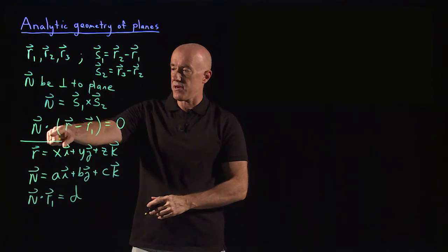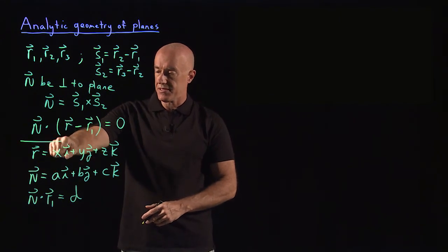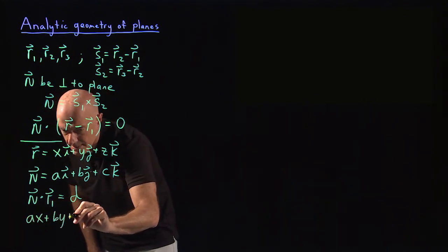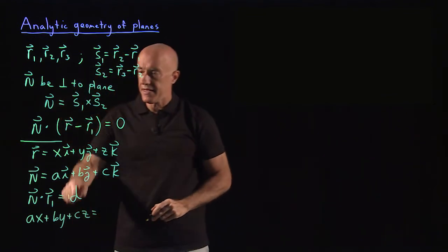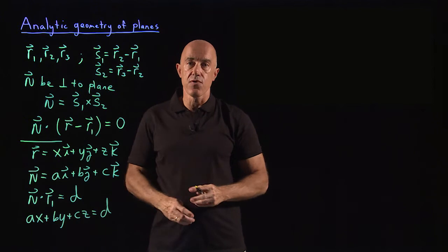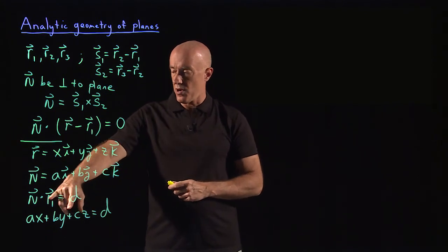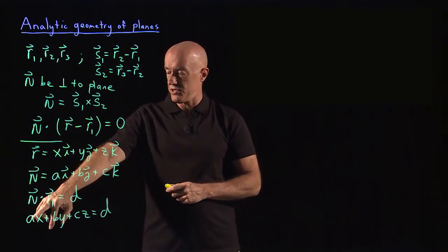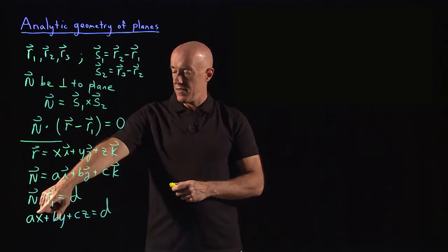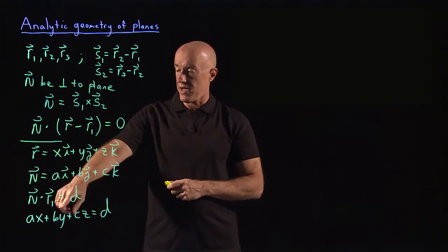Putting this together, we have n dot r equals n dot r1. So n dot r will be ax plus by plus cz, and that equals n dot r1, which is d. That is the equation for a plane in three-dimensional space. The important thing here is that the coefficients a, b, and c are just the components of the normal vector to the plane. This gives us an equation satisfied by any point x, y, z that lies inside the plane.